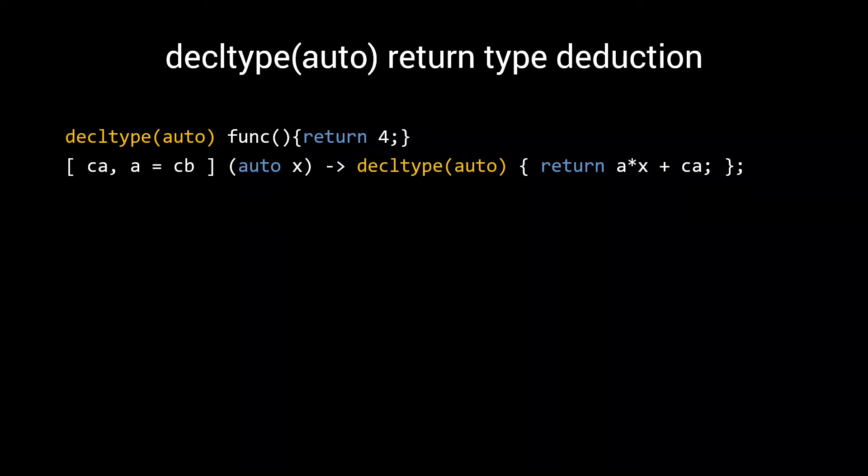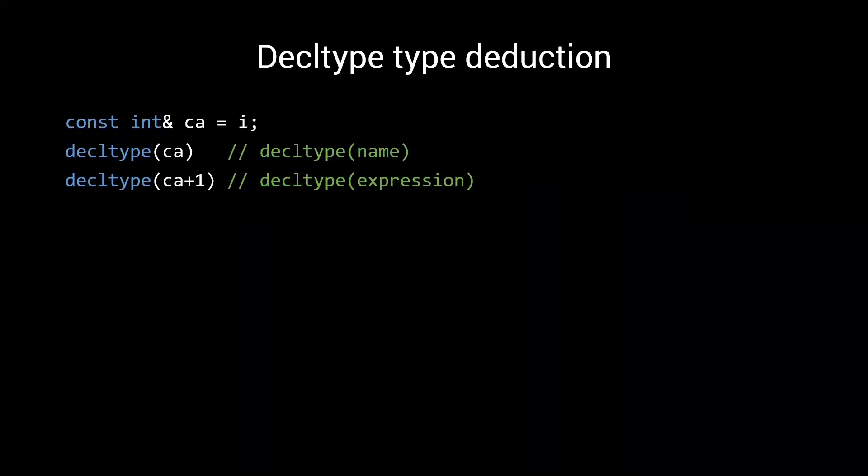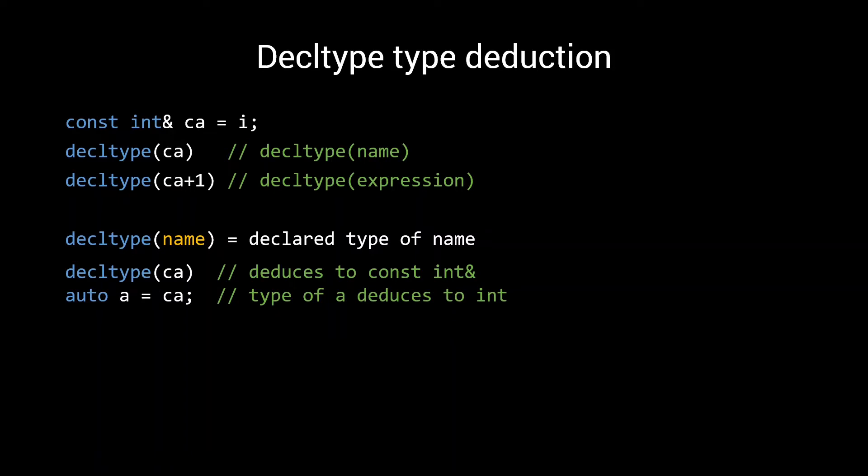In the case of decltype deduction, we distinguish two cases. Either you are requesting the decltype of a name, or you are requesting the decltype of an expression. In case you pass a name to decltype, it will resolve to the declared type of that name. In particular, this means that it never strips const, volatile, or references. This is different from auto type deduction, which just like template type deduction does strip these things when accepting by value.